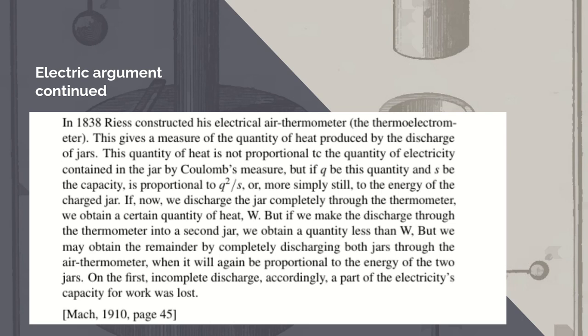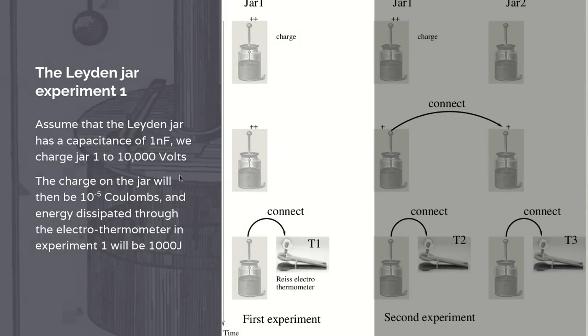But we may obtain the remainder by completely discharging both jars through the air thermometer, when it will again be proportional to the energy of the two jars. On the first incomplete discharge, accordingly, a part of the electricity's capacity for work was lost.